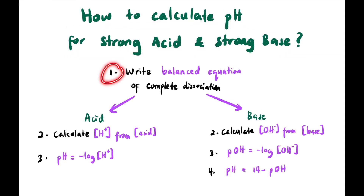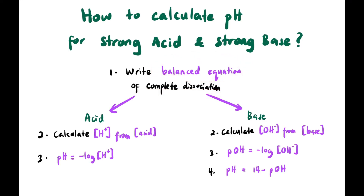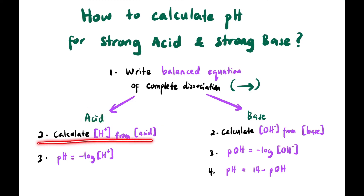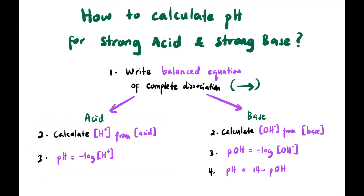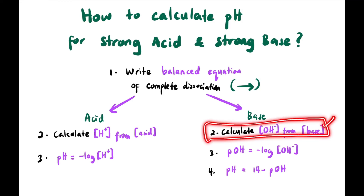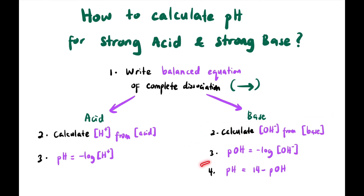Now let's learn to calculate pH for strong acid and strong base. First, balance the equation for complete dissociation — the arrow must be one-way. For an acid, take the concentration of the acid as [H⁺], then pH = -log[H⁺]. For a base, get [OH⁻] from the concentration of the base, then pOH = -log[OH⁻], and finally pH = 14 - pOH.